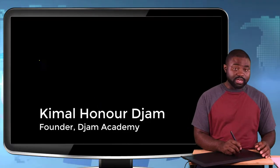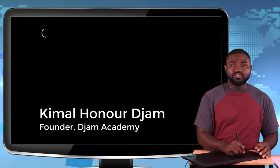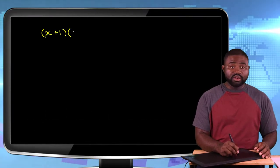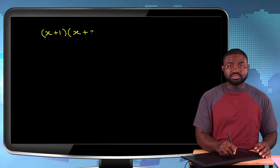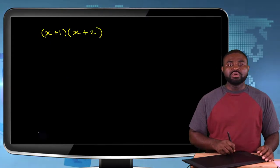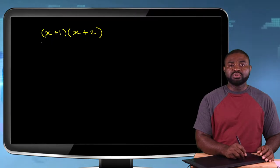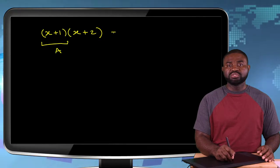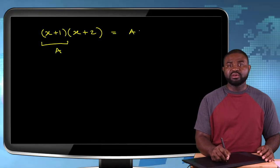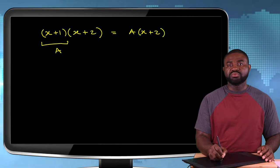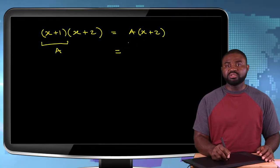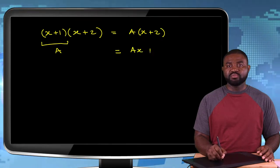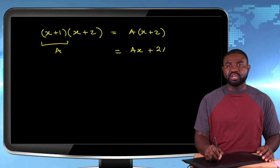Another example in expansion that I would like to show you is we have (x+1). We have here (x+2). Take for example, you can replace this by, let's say, A. So this becomes A(x+2). If you expand, you have A multiplied by x that gives us Ax, plus A multiplied by 2 that gives us 2A.